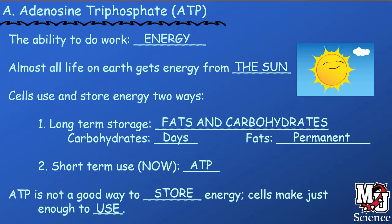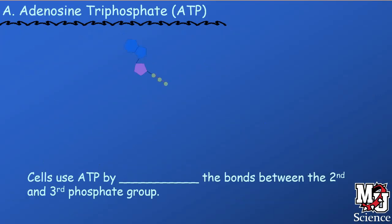Most of the ATP in your cells is used just to maintain your body temperature — burning energy to maintain homeostasis at your current 37 degrees Celsius, or 98.6 degrees Fahrenheit.